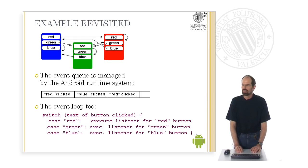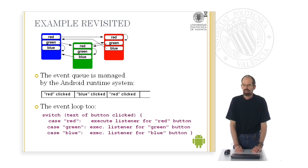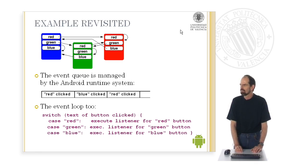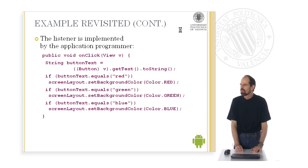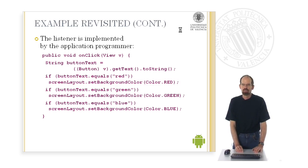Having a second look at the example, we see that this example requires an event queue which stores events like red button clicked, blue button clicked, red button clicked again, and which has an event loop checking which button has been clicked and painting the color of the screen correspondingly. Both of them are implemented by the Android runtime system. You as the programmer need only implement a listener. This listener takes the button which has been clicked as a parameter, checks which button it was, and then correspondingly reacts by painting the screen in the corresponding color.